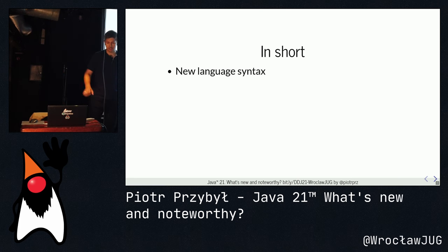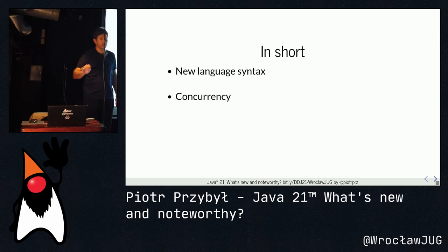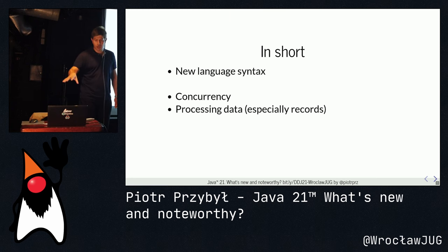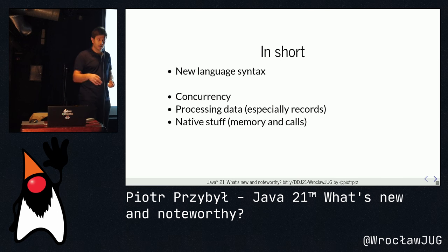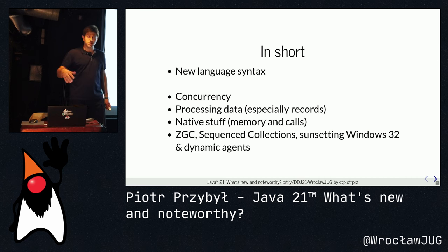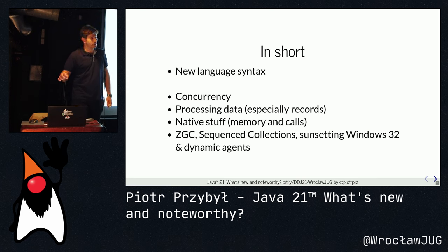In short: we have new language syntax with standard and preview features, the hot smoking stuff in concurrency, easier data processing especially with records, ongoing native stuff, and a bunch of other changes like ZGC, sequence collections, sunsetting Windows 32, and dynamic agent loading will now issue a warning.